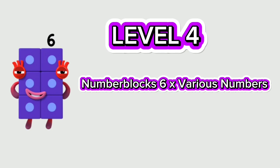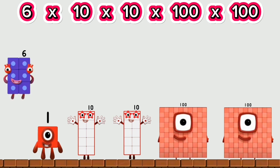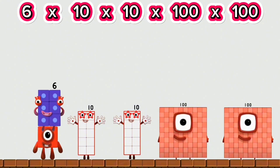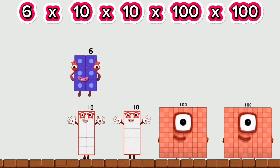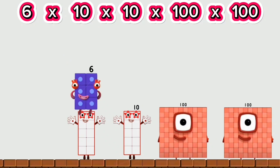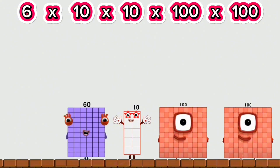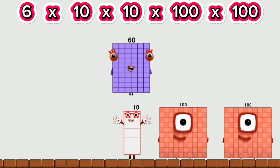Level 4. Number Blocks 6 times various numbers. 6 times 1 equals 6. 6 times 10 equals 60. 60 times 10 equals 600.